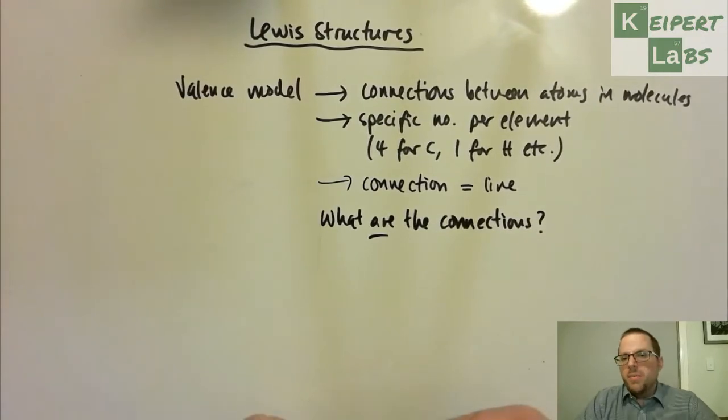The valence model was working with really simple kind of spheres, back with kind of Dalton's idea. Now that we've seen that our understanding of the atom has progressed significantly beyond that to introducing the electron and then seeing this structure of the atom, the internal structure, that puts electrons in certain spots, and we've introduced this idea that valence electrons are these particular electrons that are involved in interactions.